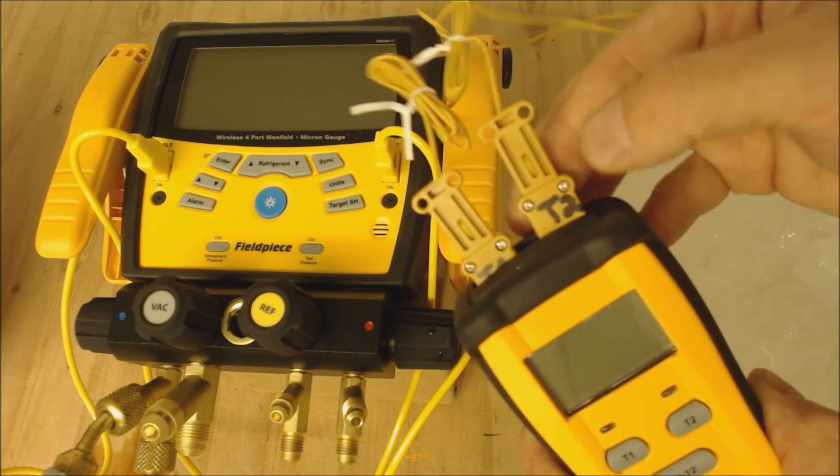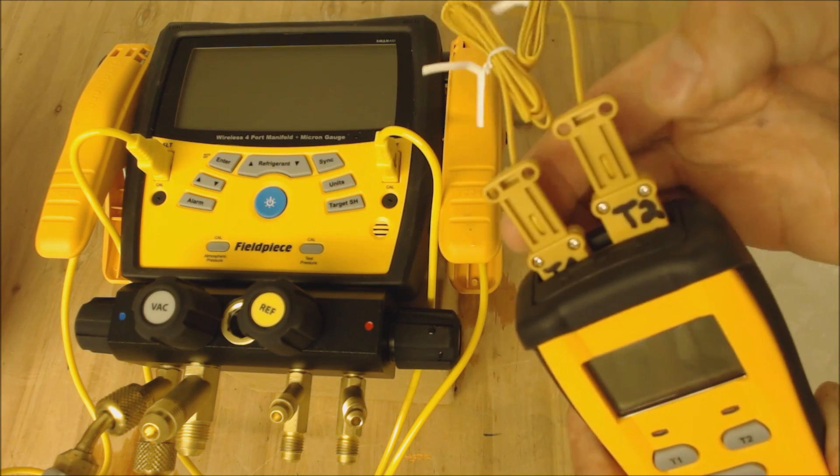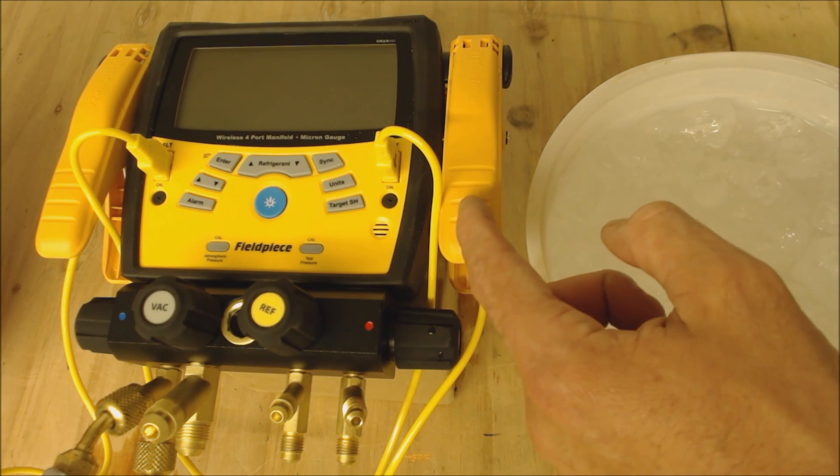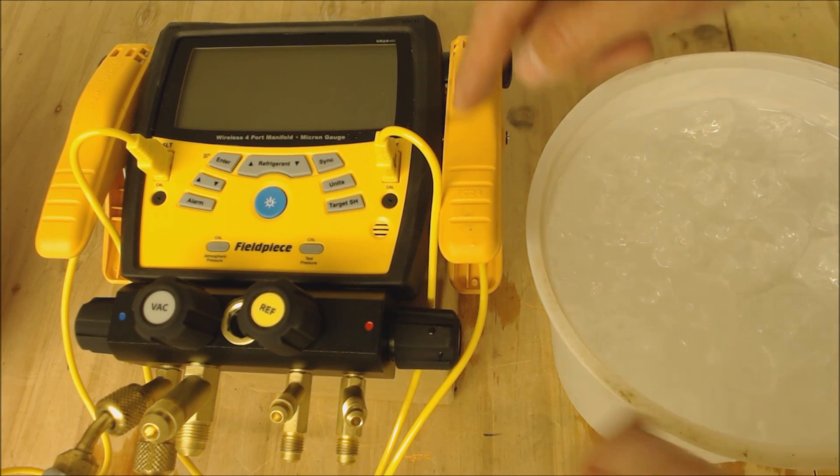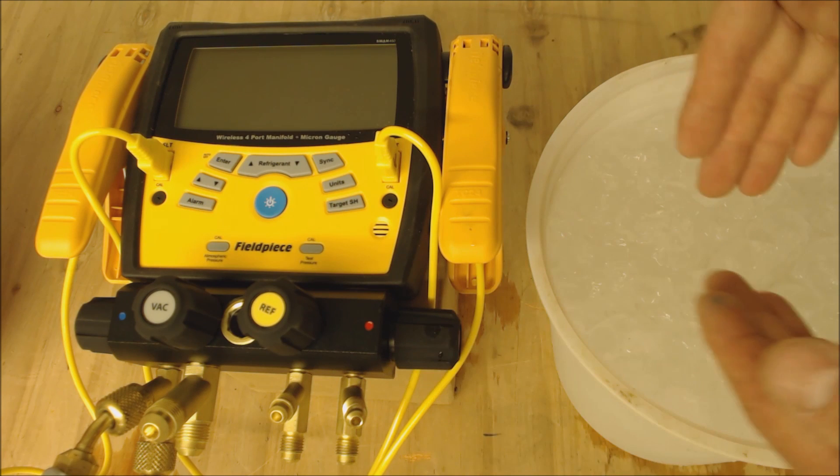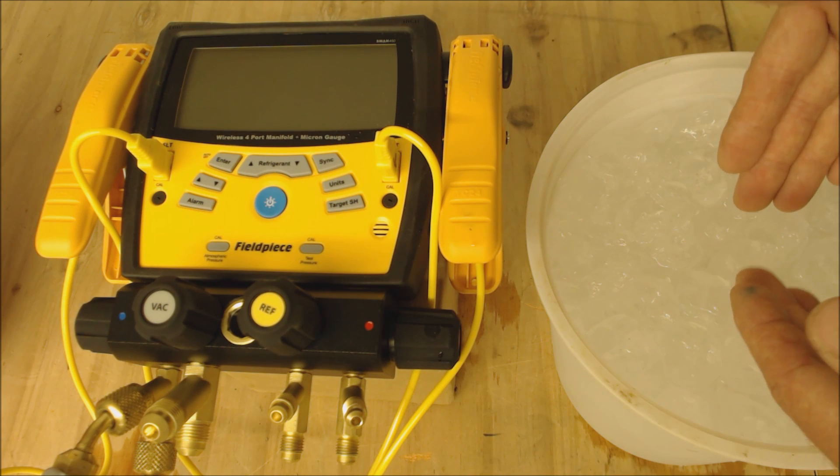You see I have T2 and T1 labeled. You want to label your digital manifold gauge set the same way because what this is doing is reading the resistance value in the wires while submerged in 32 degree water.